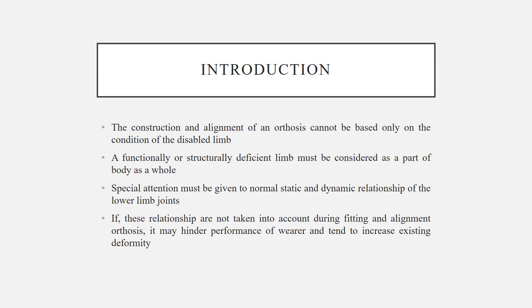Introduction: The construction and alignment of an orthosis cannot be based only on the condition of the disabled limb for which the orthosis is prescribed. A functionally or structurally deficient limb must be considered as part of the body as a whole so that proper alignment and fitting can be done. Special attention must be given to the normal static and dynamic relationship of lower limb joints so that the mechanical joint should be congruent with the normal anatomical joint. If these relationships are not taken into account during fitting and alignment, it may hinder the performance of the wearer and tend to increase the existing deformity.